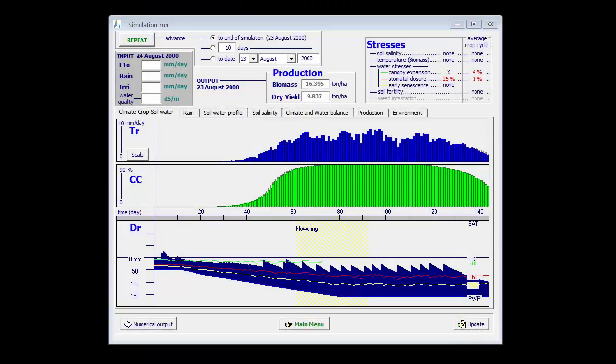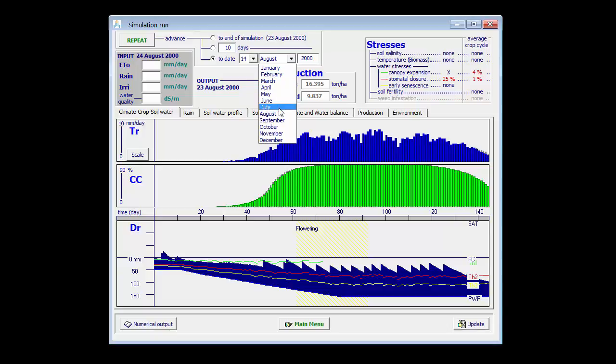Here we see the simulation result in which a calamity was not considered. Now we know that on the 14th of July there was a huge hailstorm destroying part of the canopy cover.